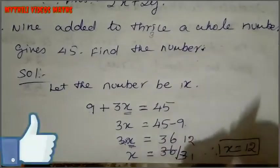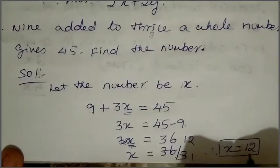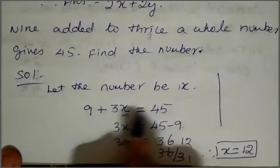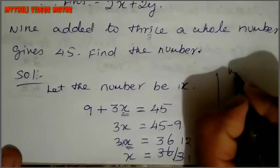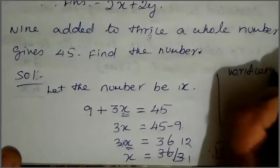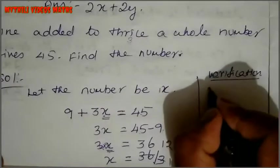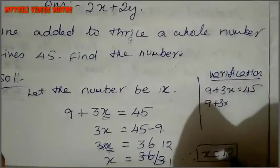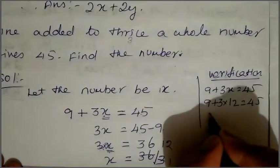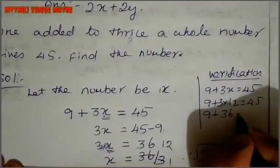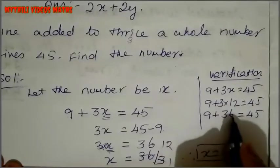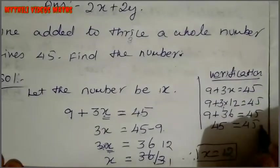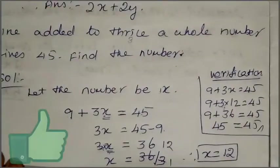Is the answer correct? Check. For verification, 9 plus 3x equals 45. 9 plus 3 into 12 equals 45. 9 plus 36 equals 45. 45 equals 45, so our answer is correct. Is it clear? If you have any doubt, comment.